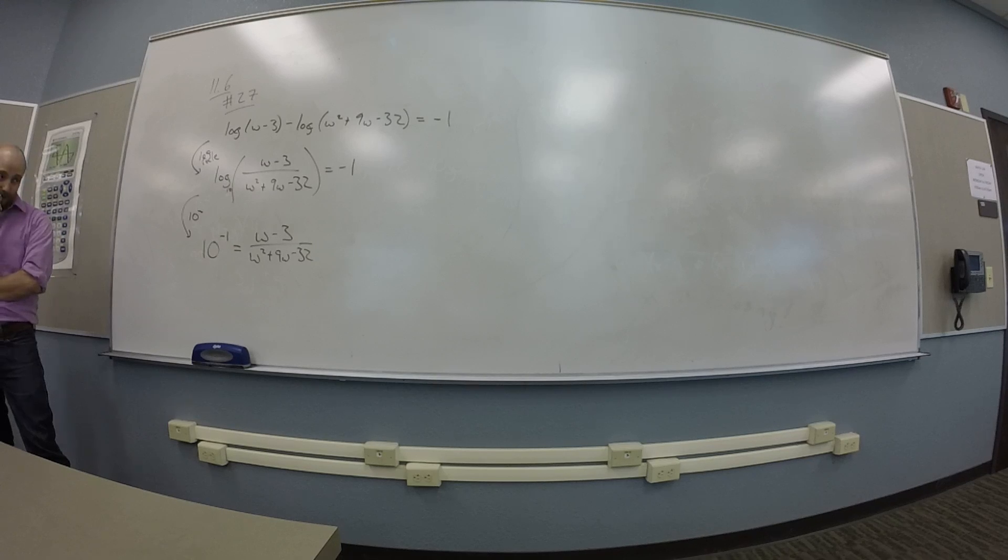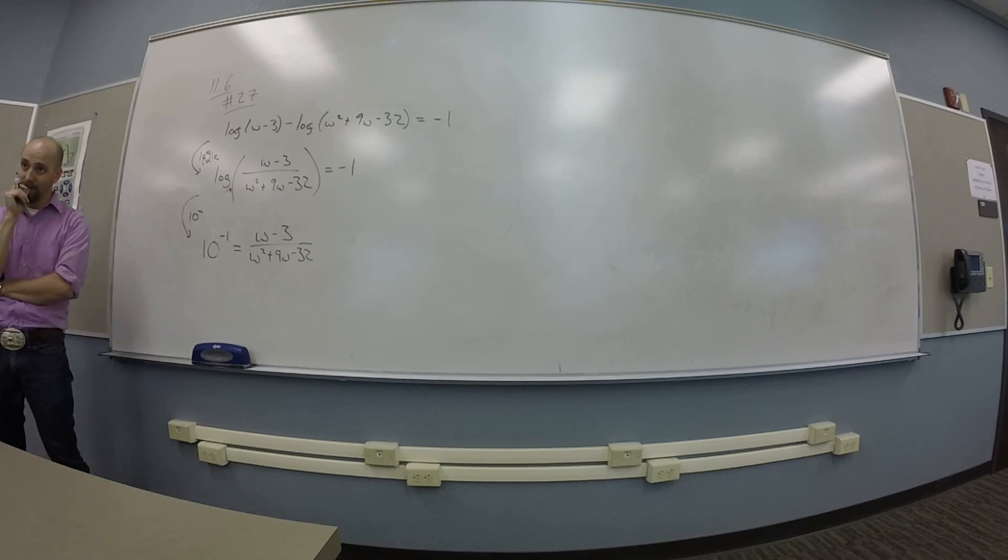So we'll get 10 to the minus 1 is W minus 3 over W squared plus 9W minus 32. Okay, okay. Okay, now what? We could try that. We could factor.